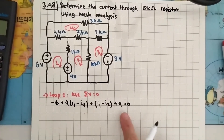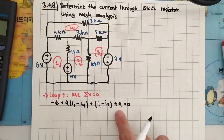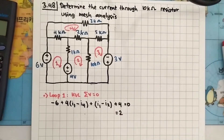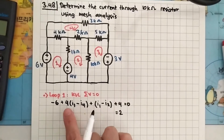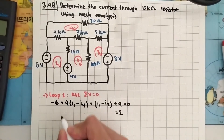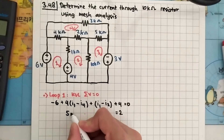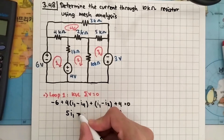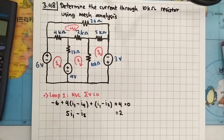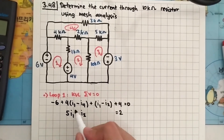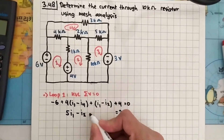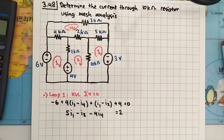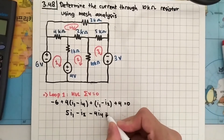Simplifying: negative 6 plus 4 is negative 2, moved to the right-hand side gives us 2. For i1, we have 4 plus 1, which is 5, so 5·i1. For i2 we have minus i2. For i3 we have none. For i4 we have minus 4·i4. Let's save this as equation 1.